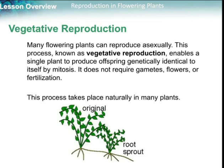Let's check other types of reproduction. Vegetative reproduction is an asexual reproduction that occurs in plants, especially flowering plants. It enables a single plant to produce offspring genetically identical to itself by mitosis. It doesn't require gametes, flowers, or even fertilization — you simply take part of the plant to make a new plant. This process takes place naturally in many plant parts.